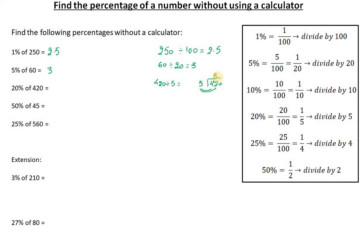8 fives in 42 with a remainder of 2, how many fives are in 20? 4. So 420 divided by 5 is actually 84.